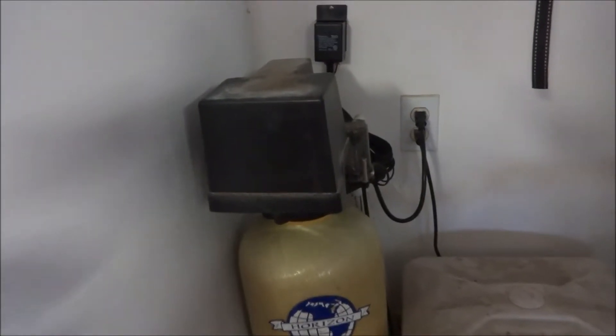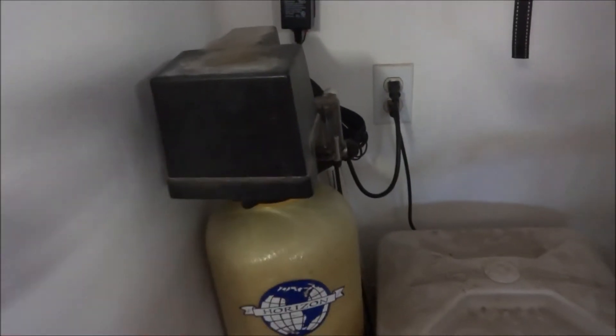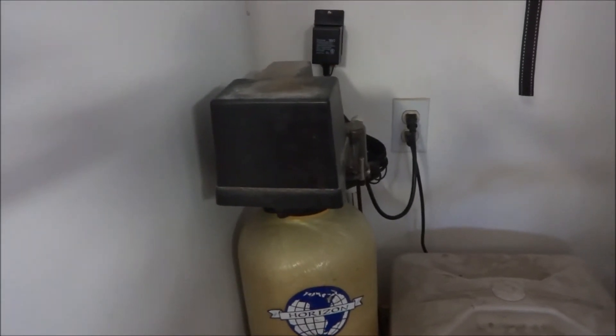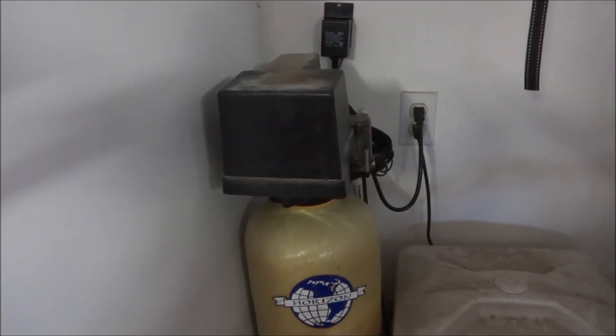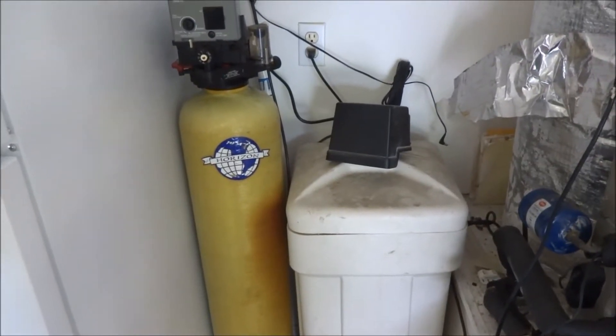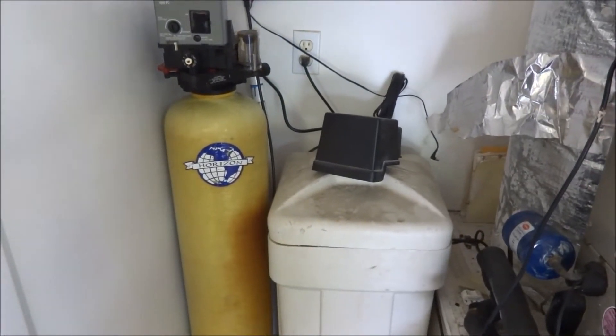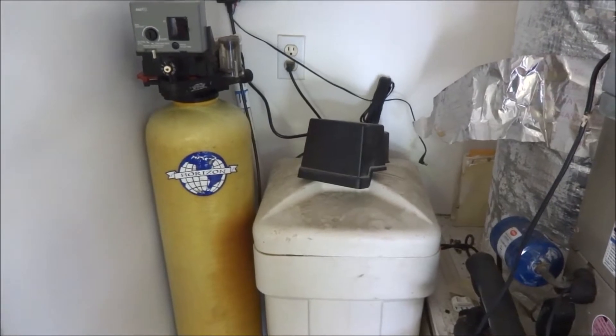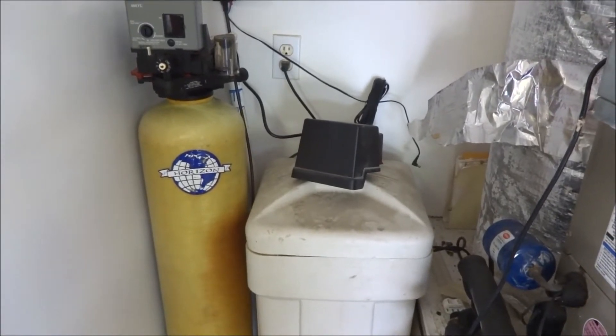Be sure you turn off your water supply running to your water softener. Whether you bypass it or turn it off, you want to make sure there's no pressure going to your water softener. Today I'm going to replace the water softener flapper valve disc set for a 155 Autotrol control valve.